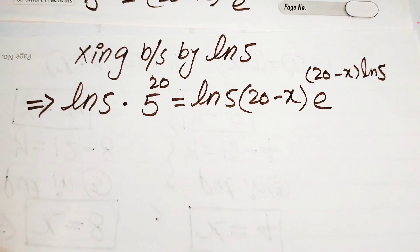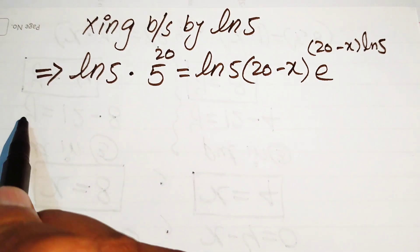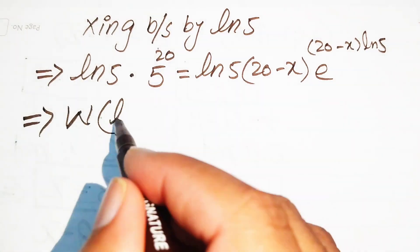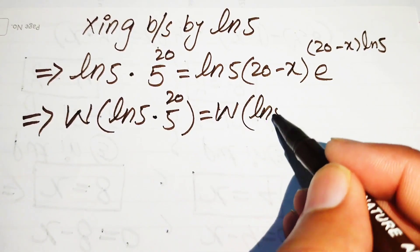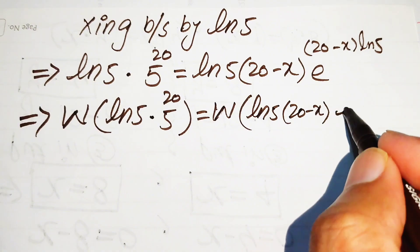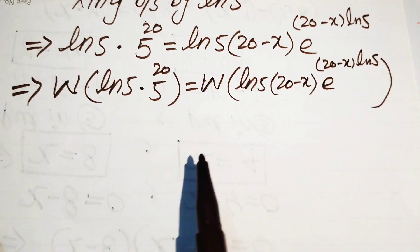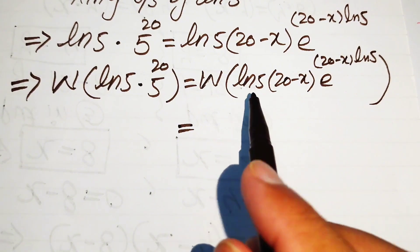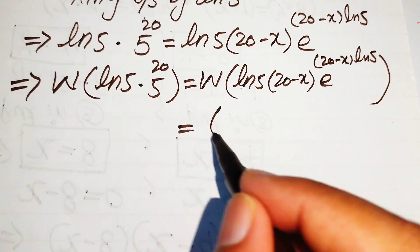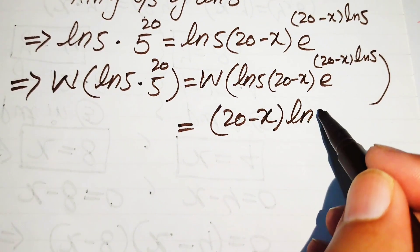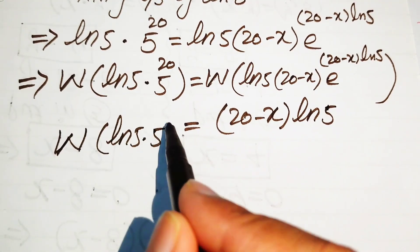Now it is time to apply the Lambert W function on both sides, because the right hand side is now in the standard Lambert W form. Applying W on both sides gives: W of log 5 times 5 to the power of 20 equals W of the quantity 20 minus x times log 5 times e to the power of 20 minus x log 5. Applying the definition of Lambert W on the right hand side, the output is the exponent of e, which is 20 minus x times log of 5.